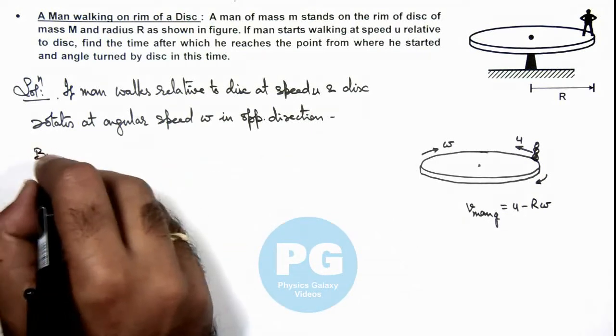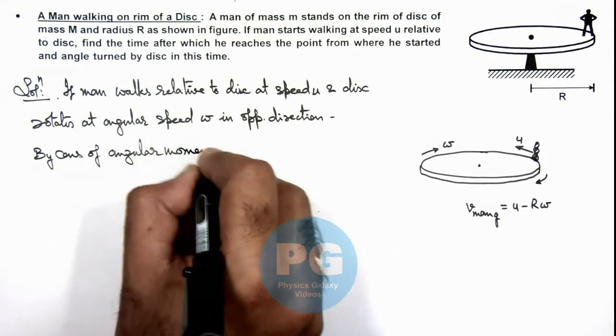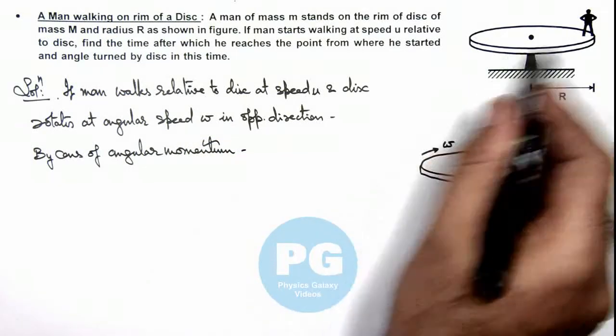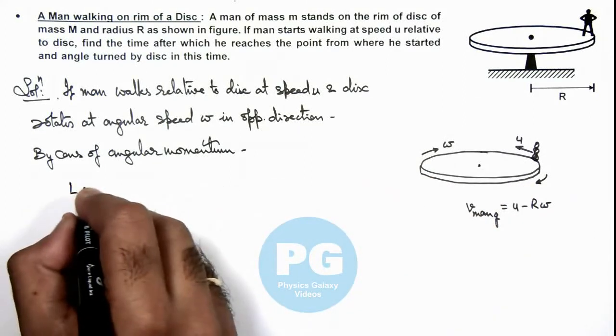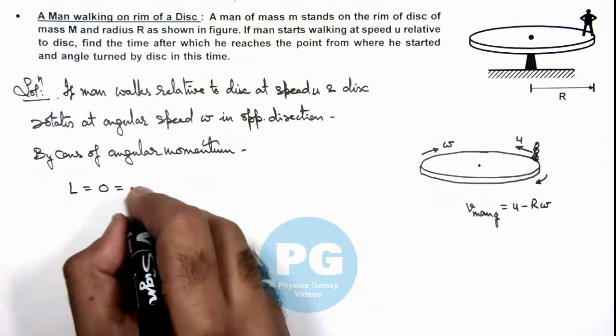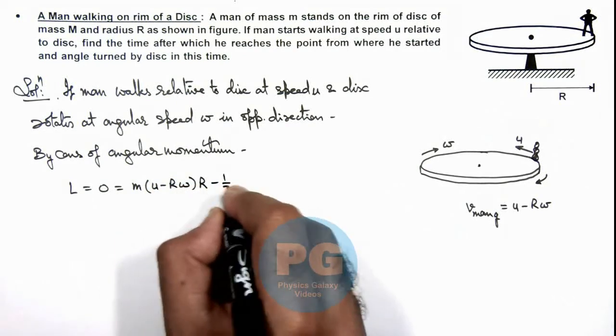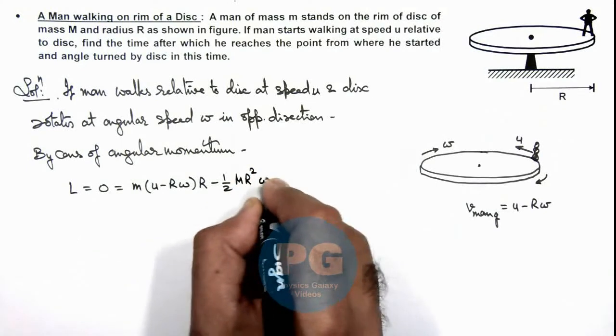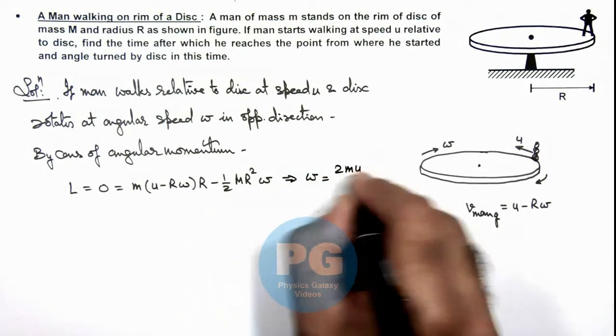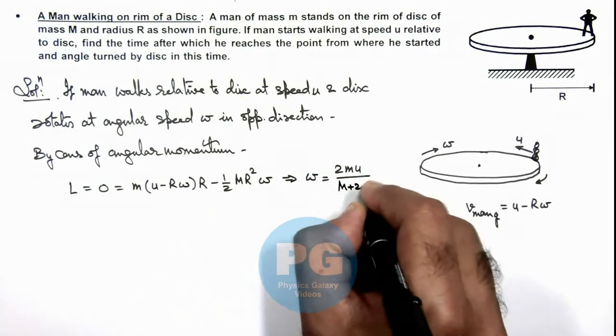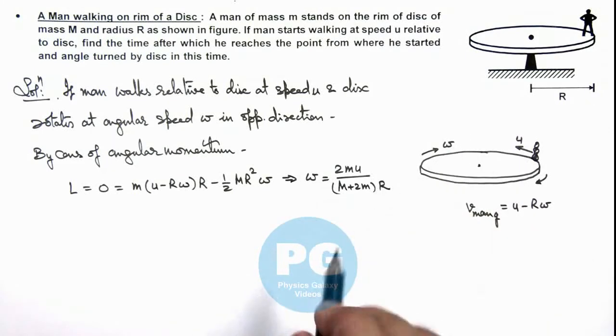So we can write by conservation of angular momentum, which should be zero initially as the disc and man were at rest, the angular momentum of this system is zero. In the final case this can be written as m(u - R omega) multiplied by R minus half M R squared multiplied by omega. Simplifying this, we get the value of omega which is 2mu divided by (M + 2m) multiplied by R. So this is the angular speed with which the disc will rotate if the man walks at speed u.